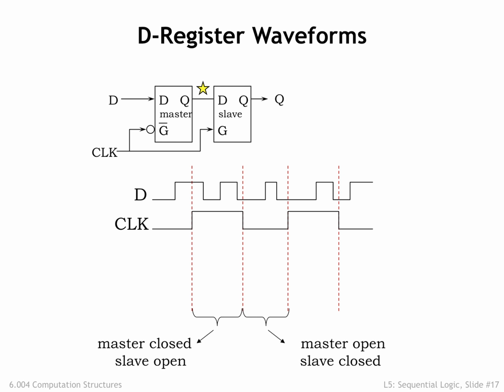The clock signal is connected to the gate inputs of the master and slave latches. Since all the action happens when the clock makes a transition, it's those events we'll focus on. The clock transition from low to high is called the rising edge of the clock, and its transition from high to low is called the falling edge. Let's start by looking at the operation of the master latch and its output signal, which is labeled star in the diagram.